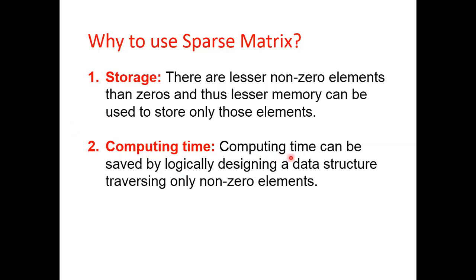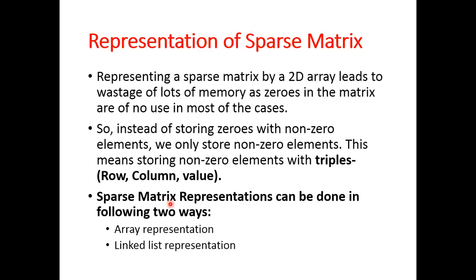The second advantage is computing time. Whenever we apply any computation, computing time can be saved by logically designing a data structure that traverses only non-zero elements. If we implement sparse matrices in such a way, we can use less memory and improve computation time. This can be done with array and linked list representations, which store all the non-zero elements. Now I am going to tell you how we can represent sparse matrices in memory.